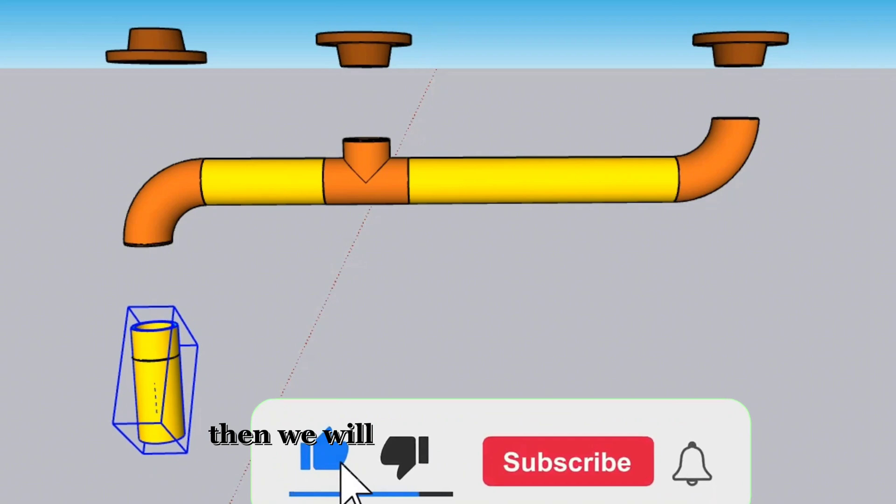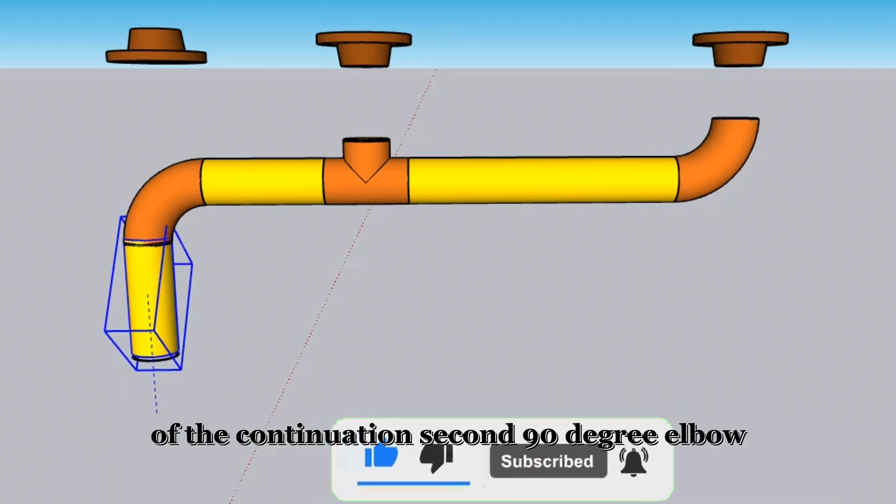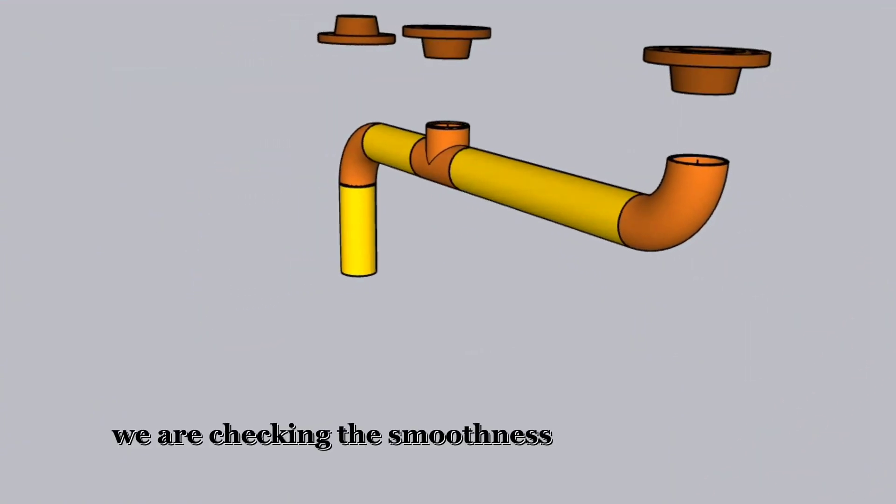Then we will install the third pipe piece to the continuation of the second 90-degree elbow. After assembling each pipe fitting, we are checking the smoothness of the pipe spool.